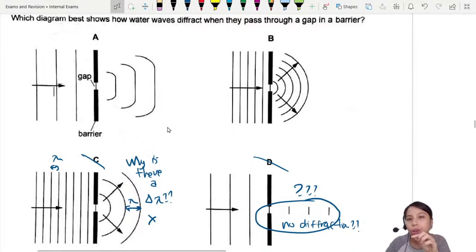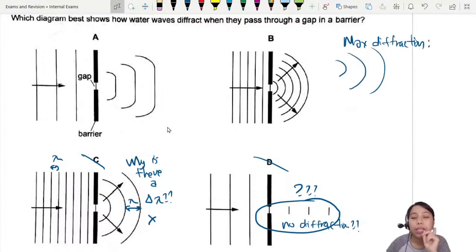So the principle you need to know is, if you want maximum diffraction, maximum diffraction means a very nice curve spread out like that. If you want maximum diffraction, then your wavelength must be roughly the same as the gap. Then you have maximum diffraction.